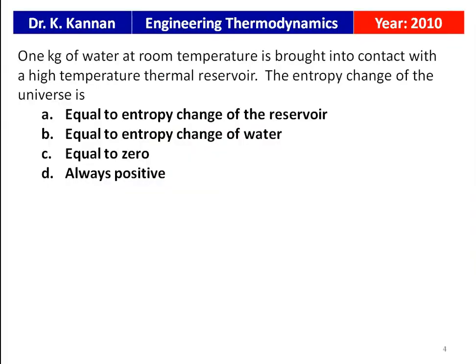This is the first question of this lecture, from the 2010 question paper. 1 kg of water at room temperature is brought into contact with a high temperature thermal reservoir. The entropy change of the universe is: option A — equal to entropy change of the reservoir; option B — equal to entropy change of water; option C — equal to 0; option D — always positive.